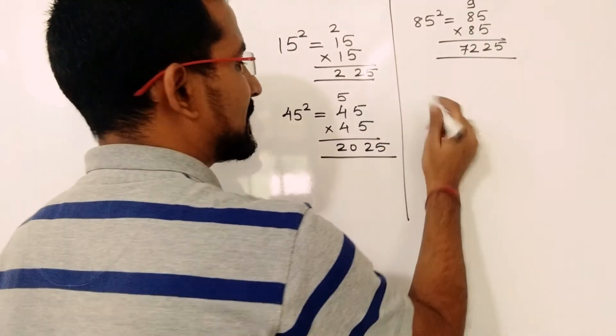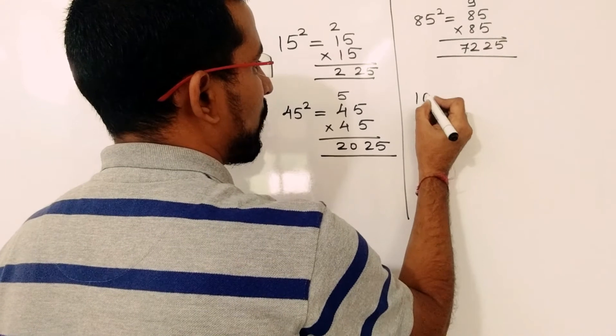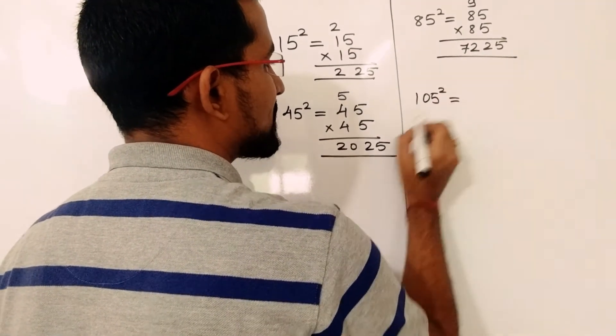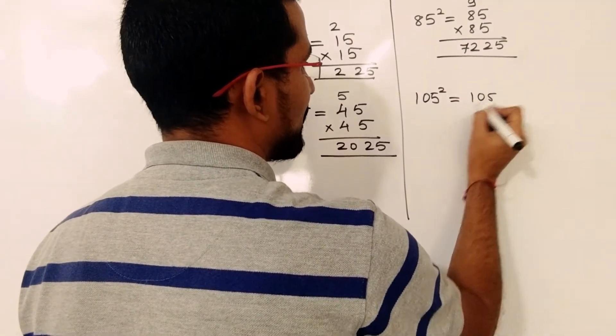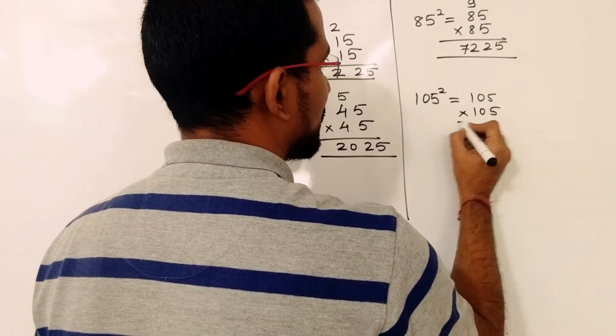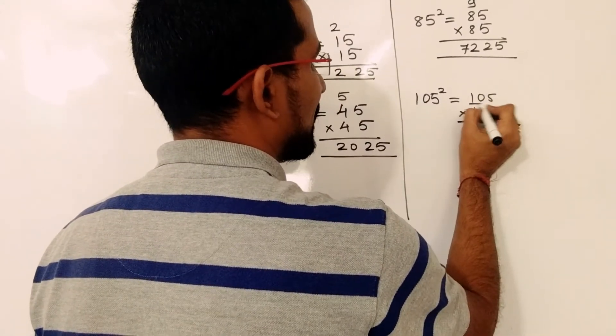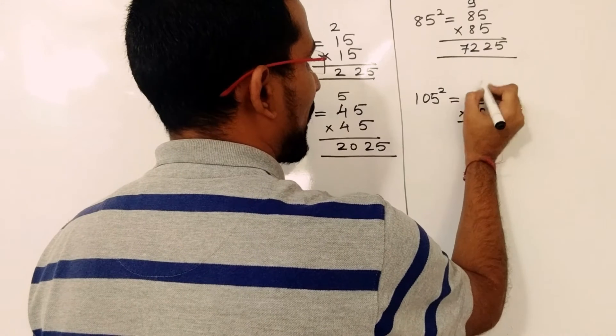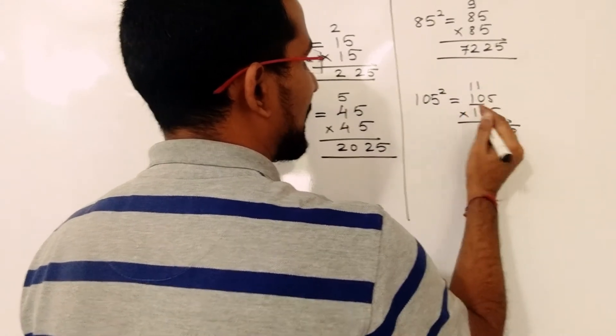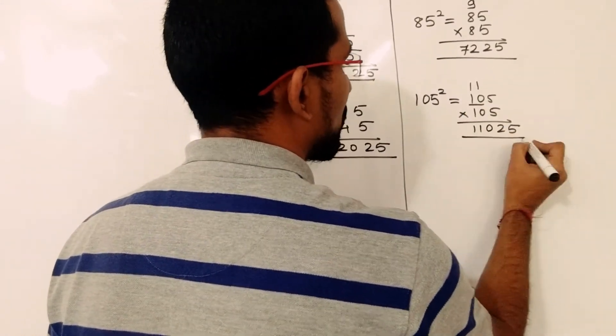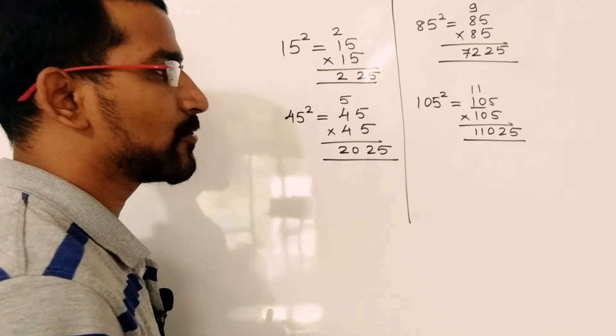I will take an example of a 3-digit number, 105 square. That is 105 into 105. So 5 into 5 is 25. Increase this 10 by 1, so it will become 11. 11 into 10, that is 110. So 11025.